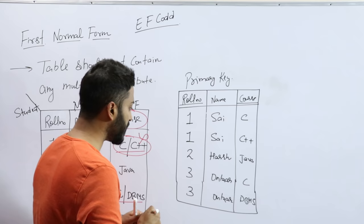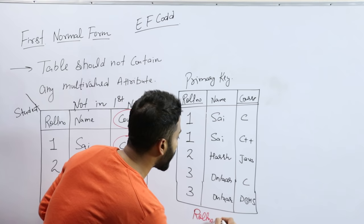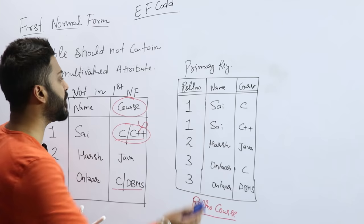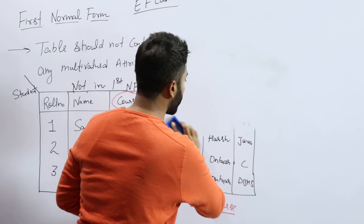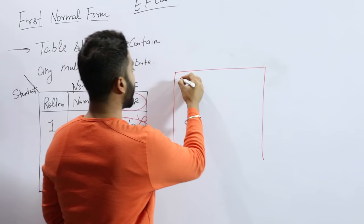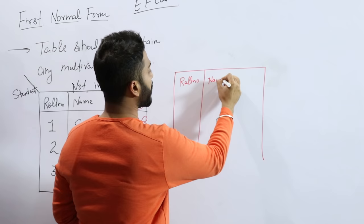This is the first representation. The second representation will be the same table. We are representing it like roll number, name of the student, course.